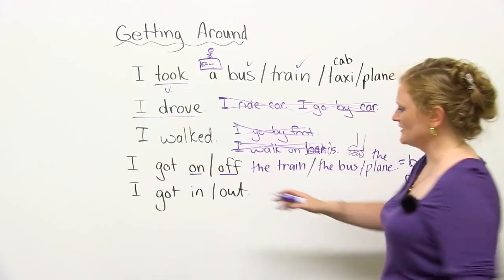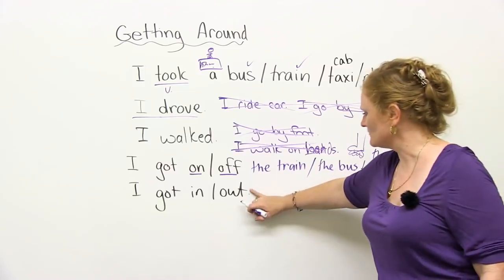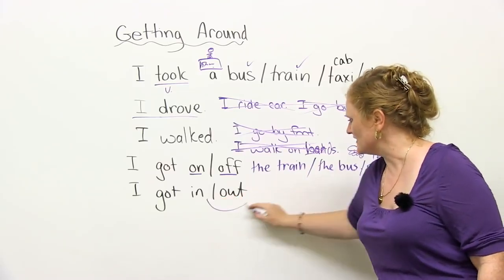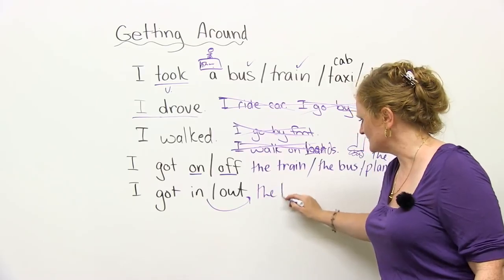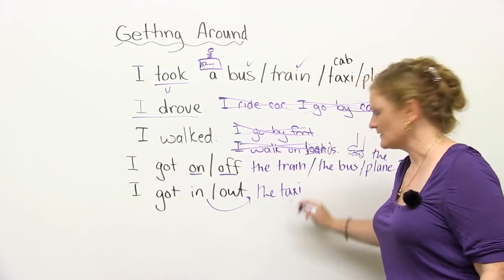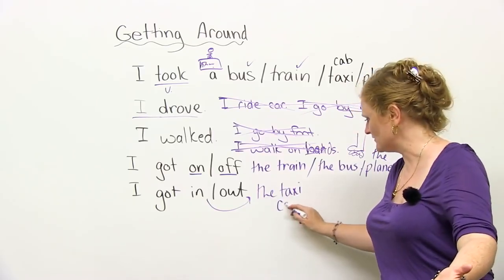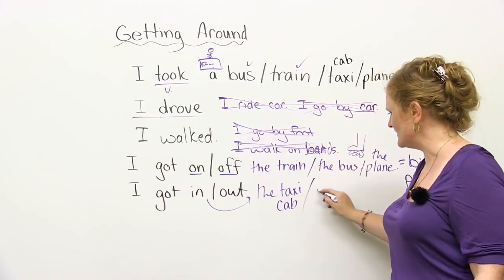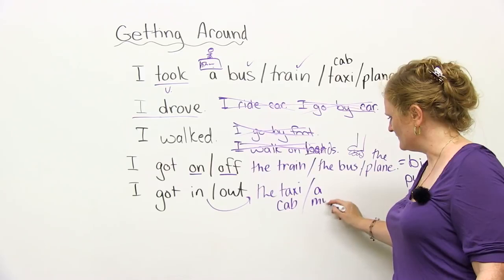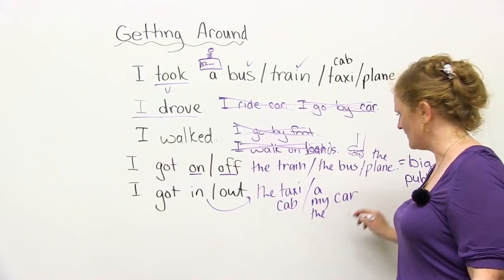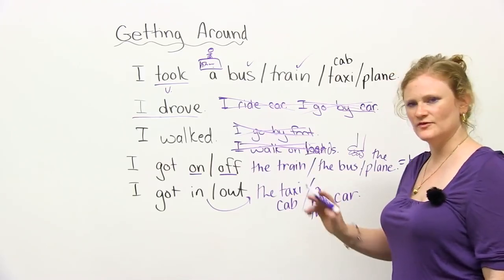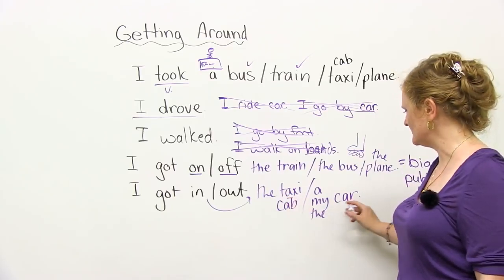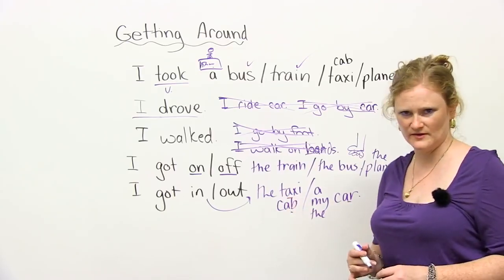In and out. So I got in or I got out. You're going to say, I got in the taxi. Or you can say, same word, I got in the cab. Also, you can say, I got in a, my, or the car.